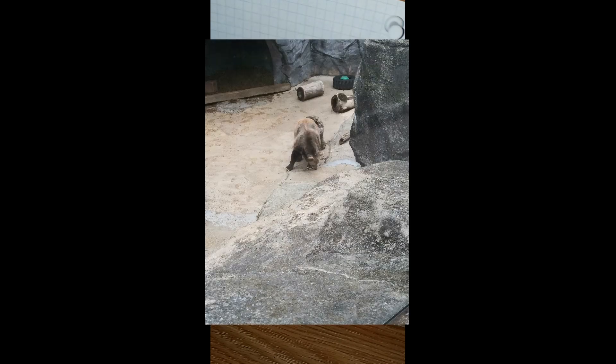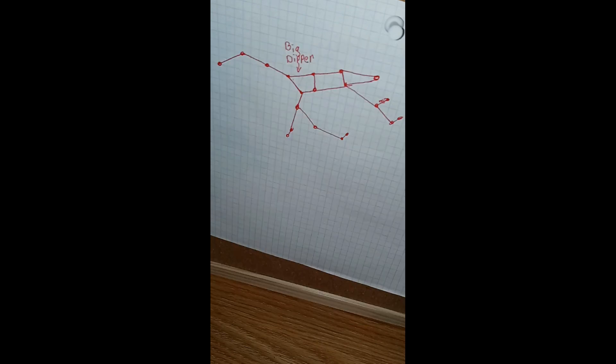For years, Callisto managed to stay away from hunters until one day mother and son found each other in the forest. The son drew his spear and was ready to kill his mother because he didn't recognize her in the form of a bear.